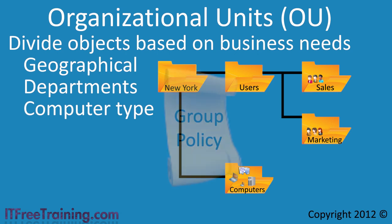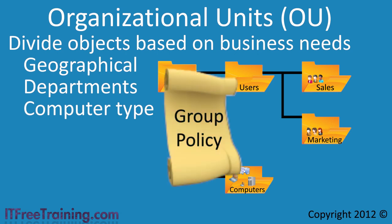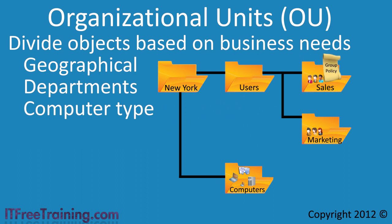Later in the course I will cover Group Policy in a lot more detail. Group Policy allows the administrator to create settings and apply them to users, and Group Policies are applied to OUs. In this example I would create a Group Policy and apply it to the Sales Users OU. The Group Policy would allow the administrator to configure settings for the user like setting their wallpaper or default printer. The next question that arises is could sorting users into OUs also be used to apply permissions? The answer to this is no.